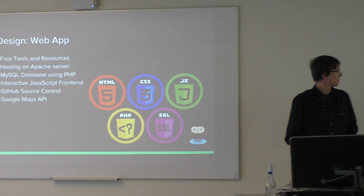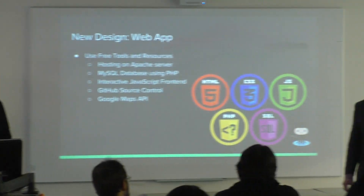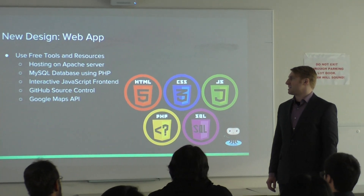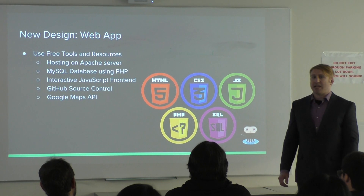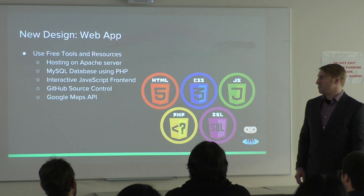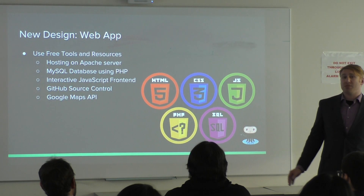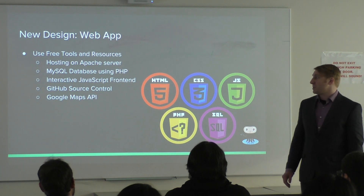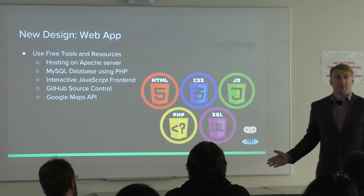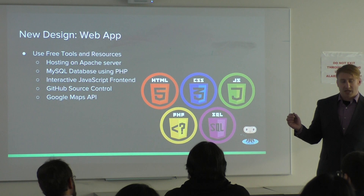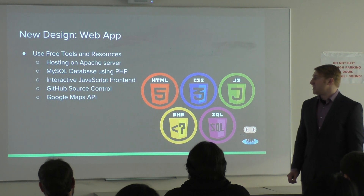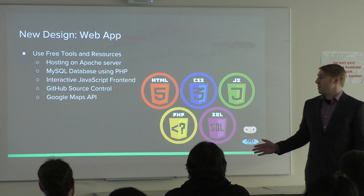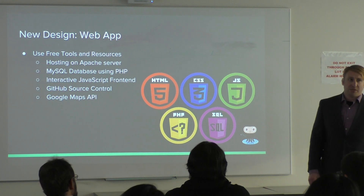For our new design, we decided to use the tools we learned here at CSUMB. We were able to utilize hosting on an Apache server on campus, use a MySQL database with PHP, and make it interactive using JavaScript to generate the visualizations dynamically. We were also able to use GitHub for source control and utilize the Google Maps API to visualize where the trace routes are headed from.